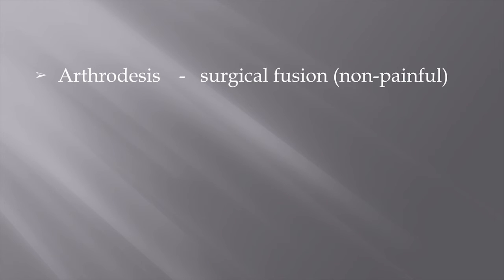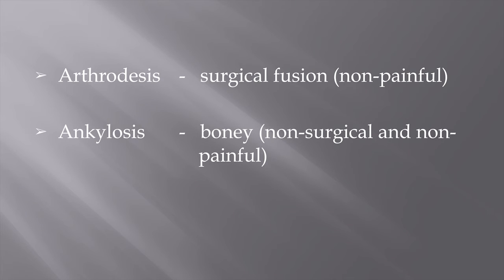Ankylosis on the other hand means a stiffening of the joint as a result of a disease process or injury without any surgical interference, and there are two types of ankylosis with either a bony or fibrous union across the joint. A bony ankylosis will have the same effect as an arthrodesis and will not be painful, whereas a fibrous ankylosis even with minimal movement can be very painful. If the fibrous ankylosis is very firm it might be pain free or minimally painful. So an arthrodesis is a surgical fusion and non-painful, whereas an ankylosis can be either bony — equivalent to an arthrodesis and non-painful — or fibrous, which can be very painful. Remember that even though an arthrodesis or bony ankylosis is not painful, the fusion can place additional stress on surrounding structures or related joints and can therefore still cause pain.